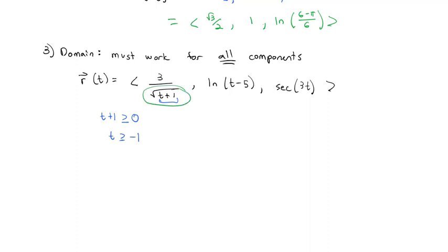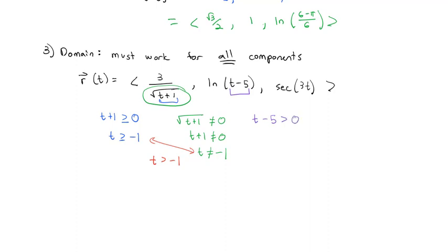We also have a denominator — the square root itself — which cannot equal zero, so t cannot equal −1. Combining these, t must be strictly greater than −1. Continuing, t − 5 is inside a natural log, and natural log arguments must be greater than zero, giving t > 5. Since t > 5 is more restrictive than t > −1, we update our domain to t > 5.